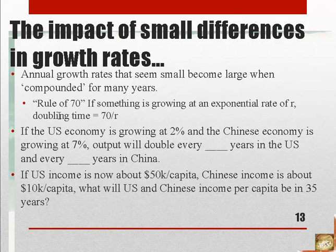So if your money was growing in the bank at 5% per year and you left it there for 28 years, it would double and then double again, because you'd have two 14-year periods. So it would actually quadruple.